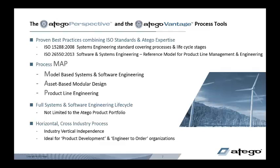The process is broken up into model-based systems and software engineering, asset-based modular design, and product line engineering — the Otago process map. The Otago Perspective can cover the full systems and software engineering lifecycle, even using tools not provided by Otago. It's horizontal and cross-industry, independent of any vertical, and ideal for both product development and engineering to order.